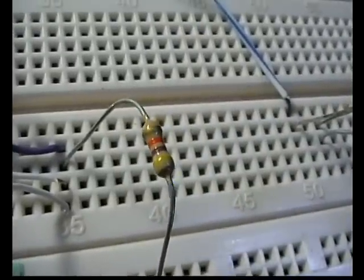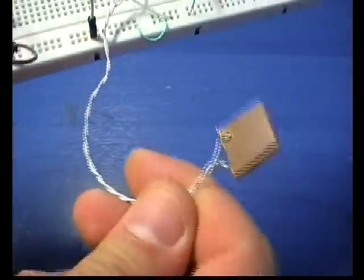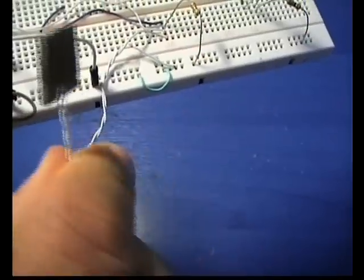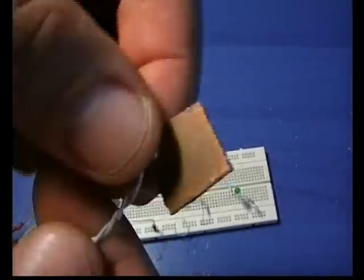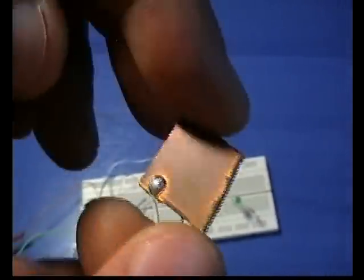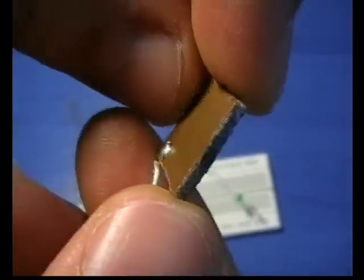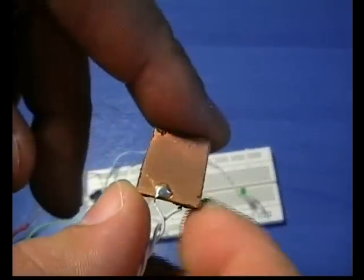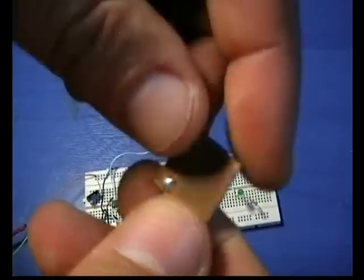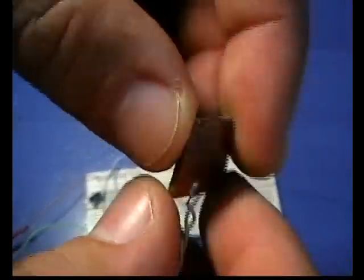This resistor is the R component of this network. The C component is the touchpad itself. The touchpad is made in a way that it adds a small capacitance to the circuit. I use a double-sided 10x10mm board for the sensor. One side of the board is the touchpad itself, and the other is connected to the ground.